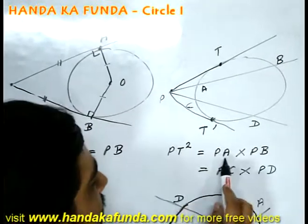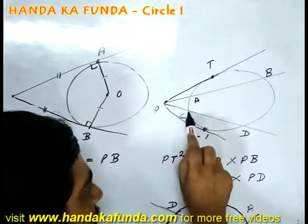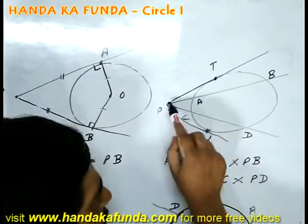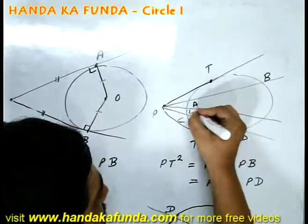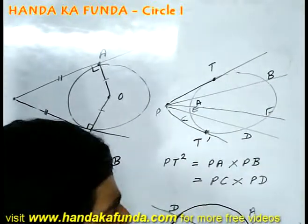That is Pt square, square of the length of the tangent, will be equal to PA into PB. That will be equal to PC into PD. That will be equal to, say I had another secant, PEF. That would have been equal to PE into PF. That always remains a constant.